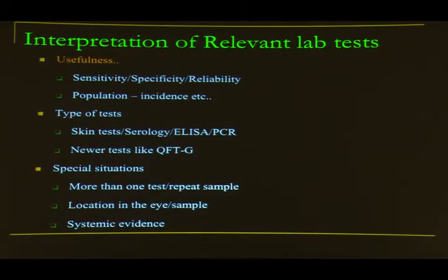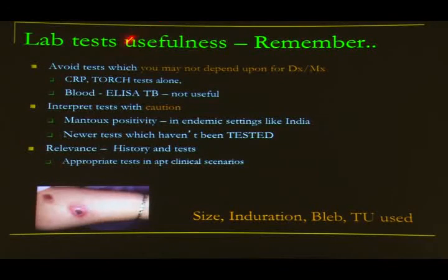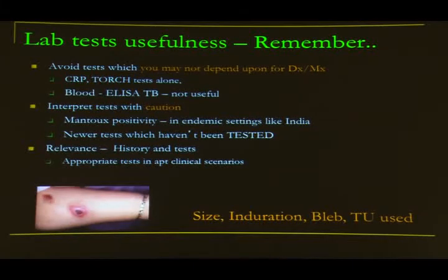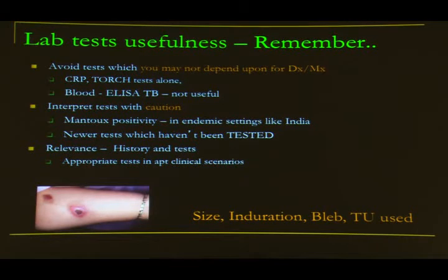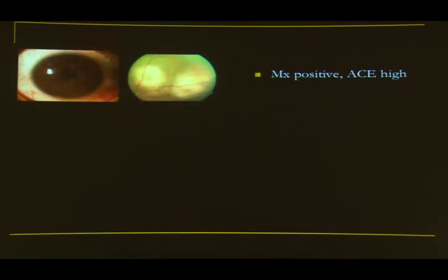Consider test usefulness carefully. Avoid tests not helpful for diagnosis or management. In granulomatous uveitis with a large subretinal abscess, if Mantoux is positive and ACE is high, don't assume sarcoidosis because ACE indicates granuloma load — it could still be tuberculosis. A typical tuberculosis uveitis requires careful test selection.